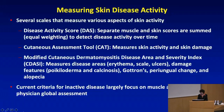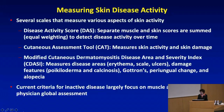One of the problems is that the current criteria for inactive disease largely focuses on muscle assessment and physician global assessment. Skin disease plays a part, but it has not been a major part — and that's something we need to keep in mind because therapy is directed towards achieving inactive disease.